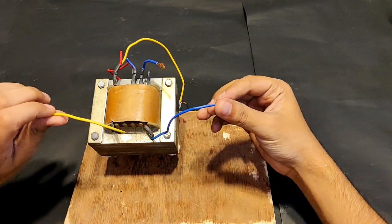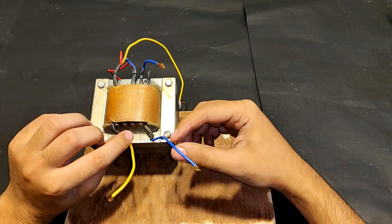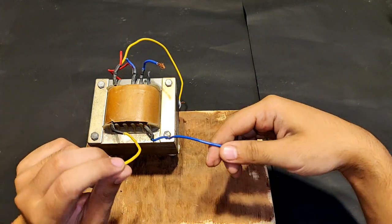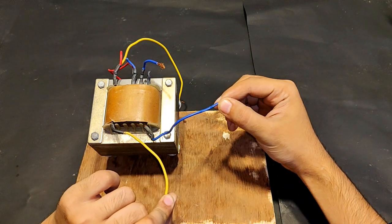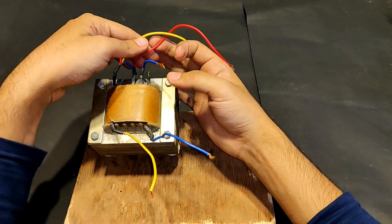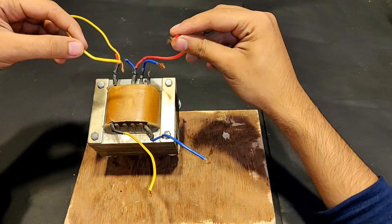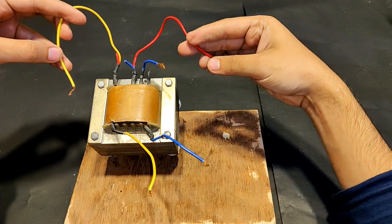The two terminals, yellow and blue, are secondary low voltage high current winding output terminals on which 24 volts 10 amperes appear. These two red and yellow wires are the 220 volts input side of this transformer.